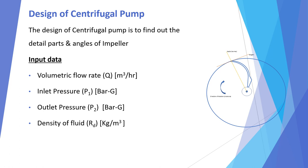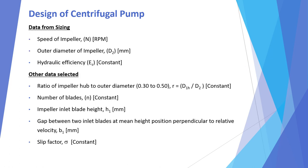The design of a centrifugal pump is to find out the detailed parts and angles of the impeller. The input data required are: volumetric flow rate Q, inlet pressure, outlet pressure, and density of the fluid. Based on the sizing of the centrifugal pump, we know the impeller speed N, the outer diameter of the impeller D2 in mm, and the hydraulic efficiency Es. Other data are selected considering the design criteria.